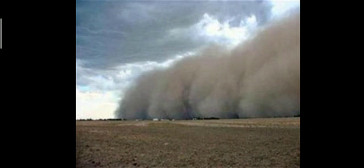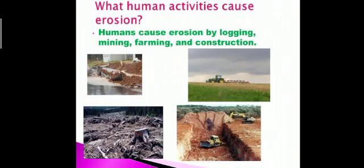Next we talk about the activities of humans that cause erosion. The roots of plants hold soil particles together to reduce erosion. Human activities have reduced plant cover and caused an increase in soil erosion. Soil erosion is mainly caused by deforestation — humans cutting plants.